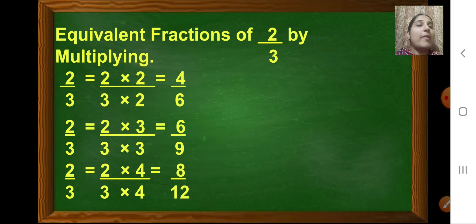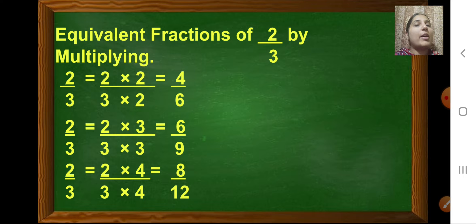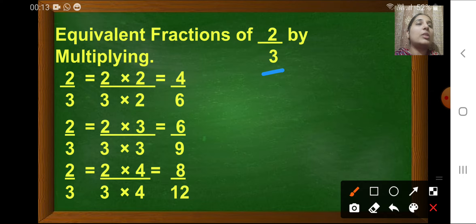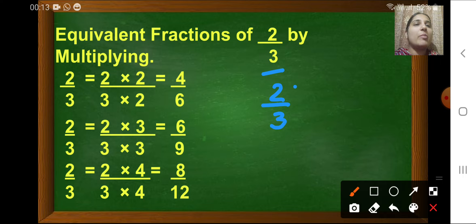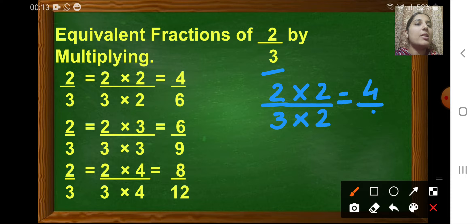Today we will see how to find equivalent fractions of a given fraction. We can find the equivalent fraction of a given fraction either by multiplying or by dividing. First, we will see how we can get it by multiplying. Our fraction here is 2 upon 3. To get the equivalent fraction by multiplying, we multiply both the numerator and denominator by the same number. Here we have multiplied by 2, so 2×2=4 upon 3×2=6. That is the first equivalent fraction of 2 upon 3.